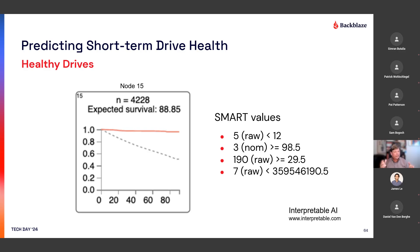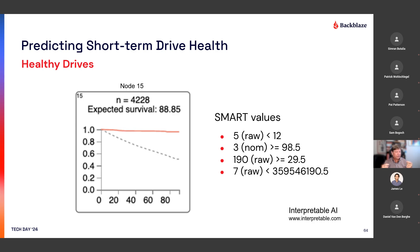What you get at the end — what those nodes at the bottom represent — is on one side you can get things called healthy drives. In this case, a given drive with these SMART attribute values is going to have a survival rate over the next 90 days of 88.5%. That's still a 12% failure rate, but the most interesting part is when you stretch this to the next five to seven days. You start to see a survival rate of 99.97% — at three or four days, you know with a high degree of certainty that all of the drives with this attribute are probably going to survive. You don't have to worry about them.